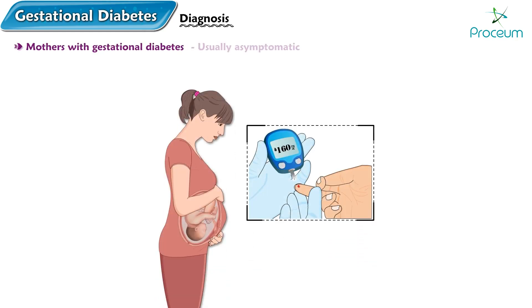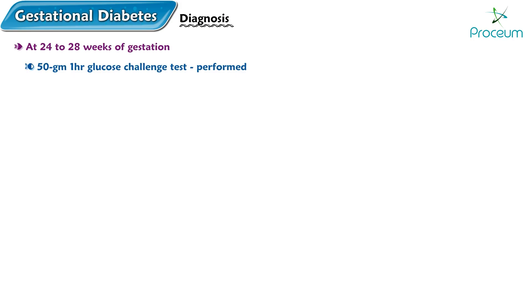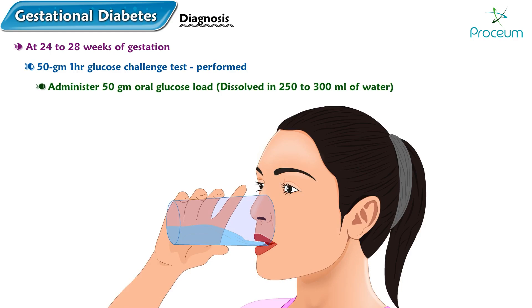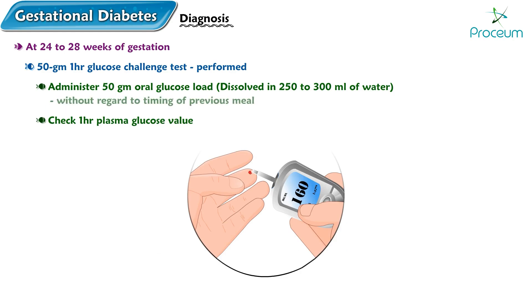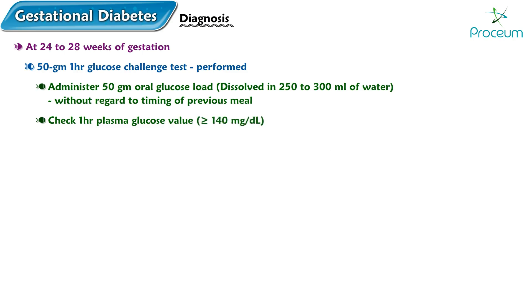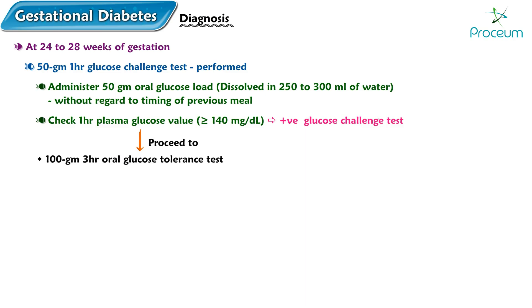Now let's learn about the diagnosis. Pregnant patients with gestational diabetes are usually asymptomatic but will have an abnormal glucose tolerance test. At 24 to 28 weeks of gestation, a 50-gram, one-hour glucose challenge test is routinely performed. It consists of administering a 50-gram oral glucose load and checking the plasma glucose one hour later, without regard to the timing of the previous meal. A one-hour plasma glucose value of greater than or equal to 140 mg/dL is considered a positive glucose challenge test and is an indication to proceed to the 100-gram, 3-hour oral glucose tolerance test.